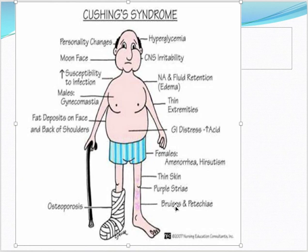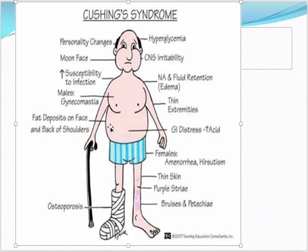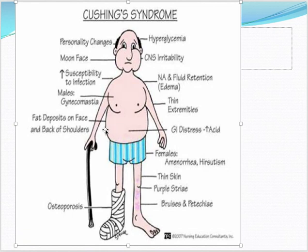Patients have a typical appearance: a round moon face, a buffalo hump on the back, fat deposits in the subclavicular region and abdomen, facial redness or plethora, purple striae on the abdomen, and muscle wasting with thin extremities. Skin becomes very thin, and some develop acanthosis nigricans. Hypertension and hyperglycemia are also present.